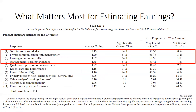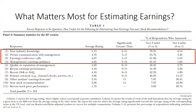Next question: what matters most for estimating earnings? Again, industry knowledge tops the list. Second is private communication with management — that's a little bit surprising. Earnings conference calls come in third, and management's earnings guidance comes in fourth, then there's a break point. The real way you add value in estimating earnings is being an industry expert. Pick one or two industries and get really good in them. But it's also fascinating that private communication with management is the number two most important factor when it comes to estimating earnings.